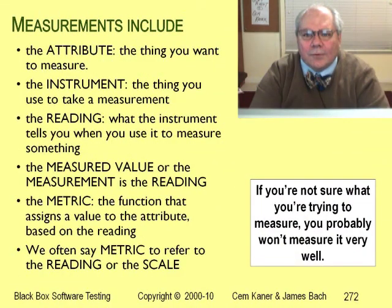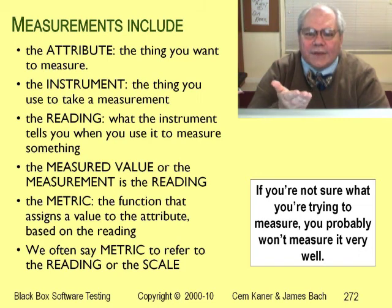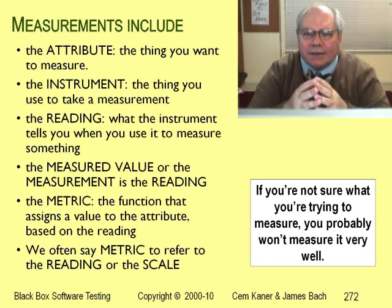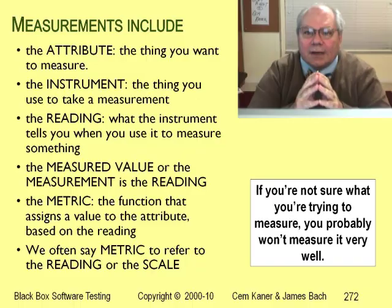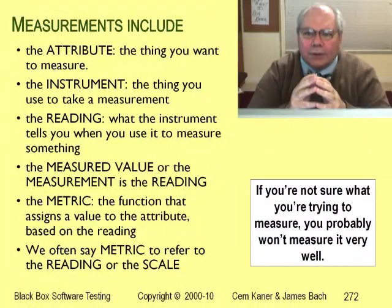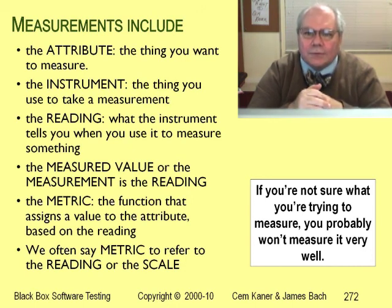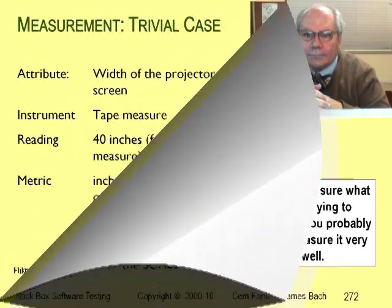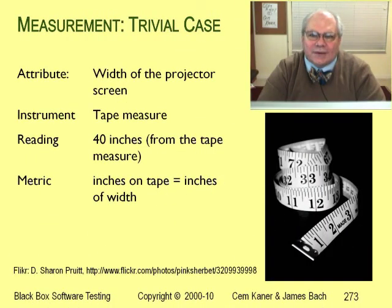The starting point for measurement is the attribute — the thing we're trying to measure. For example, when we ask how good is this product, our attribute is product quality. We might use many kinds of data to estimate a value for an attribute, but the reason we collect those data is to get an estimate of this attribute, product quality. Once we know what type of information we're looking for, our next question is how to get it. In practice, we probably use one or more measuring instruments. Let's work through these ideas with an example.